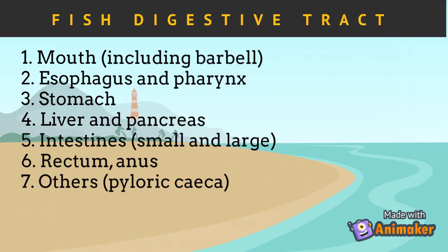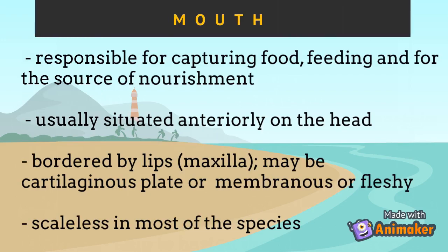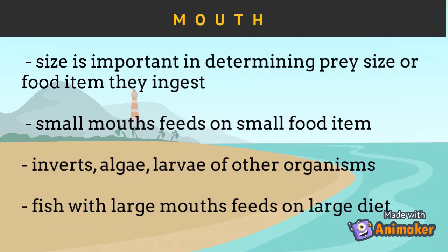Pyloric seca also play a vital role in fish digestion. The mouth is responsible for capturing food, feeding, and as a source of nourishment. It is usually situated anteriorly on the head, bordered by lips and maxilla, and may be cartilaginous, membranous, or fleshy depending on the fish group, but is scaleless in most species. Mouth size is important in determining the prey size or food item ingested. Fish with small mouths feed on small food items such as invertebrates, algae, and larvae of other organisms. Large mouths feed on larger diet items.